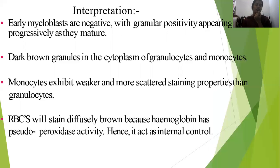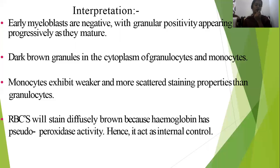In interpretation: early myeloblasts are MPO negative, with granular positivity appearing progressively as the cells mature. Dark brown granules are seen in the cytoplasm of granulocytes and monocytes; monocytes exhibit weaker and more diffuse staining than granulocytes. Red blood cells stain diffusely brown due to hemoglobin, which has pseudo-peroxidase activity, giving MPO positivity and acting as an internal control.